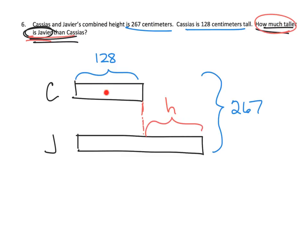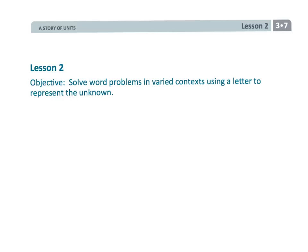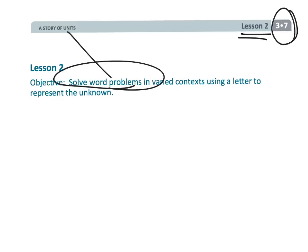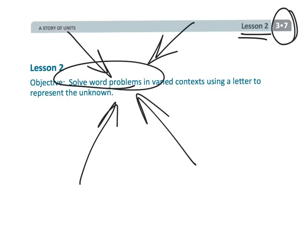The question asks how much taller Javier is — I'll use H for height difference. But one thing we need to do first is figure out Javier's height, so I'll put a question mark there. That's your classic model, though students could draw other models to get the answer. That wraps up third grade module 7 lesson 2, where the focus is on word problems and helping students develop real confidence in drawing pictures to represent their thinking so they can solve for the unknown.